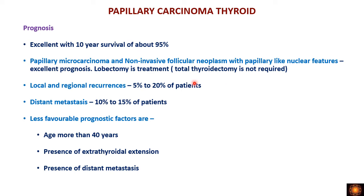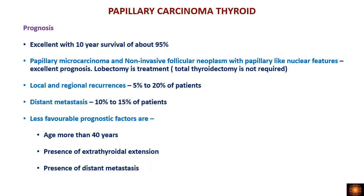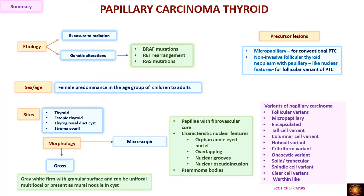Compared to other thyroid carcinomas, papillary carcinoma has an excellent prognosis with a 10-year survival of about 95 percent. Precursor lesions — papillary microcarcinoma and NIFTP — have excellent prognosis and require only lobectomy, not total thyroidectomy. Local and regional recurrences occur in 5 to 20 percent of patients, and distant metastasis in 10 to 15 percent. Less favorable prognostic factors include age above 40 years, extrathyroidal extension, and presence of distant metastasis.